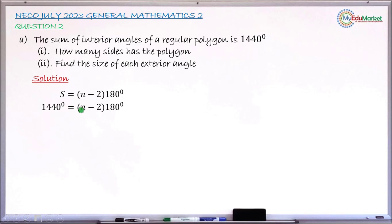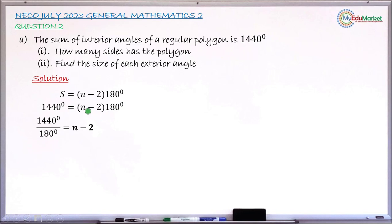It is N that we want to find — the number of sides the polygon has. So we divide both sides by 180, so that we isolate (N minus 2) on the right-hand side. Dividing both sides by 180 gives: 1440 divided by 180 equals N minus 2. The 180s cancel on the right, and 1440 divided by 180 gives 8.